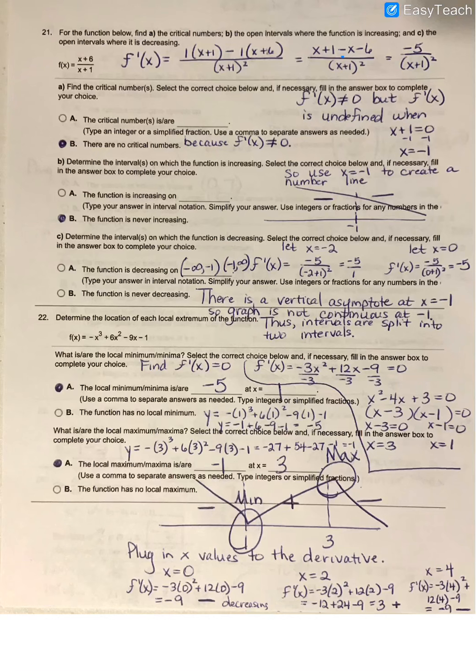On question 21, we are once again looking for critical numbers. In this case, notice our original function is a fraction, so we're going to have to use the quotient rule.